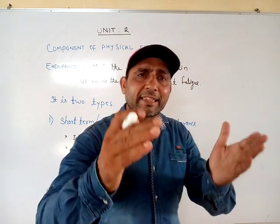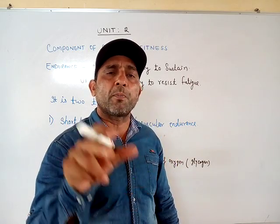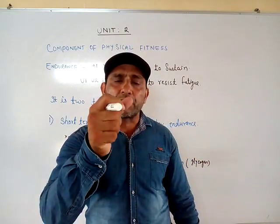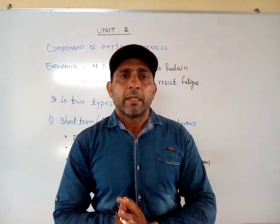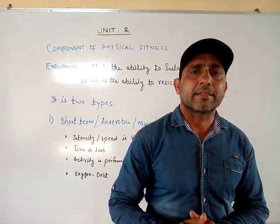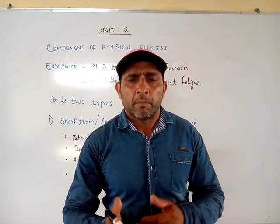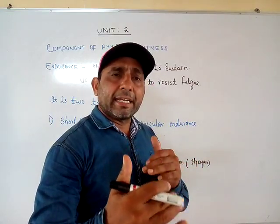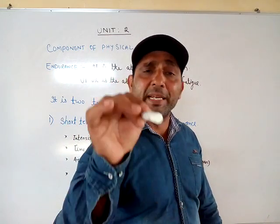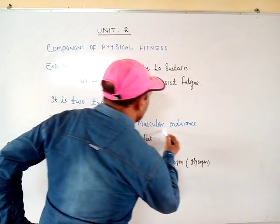So what the body does is it uses the stored energy in the muscles in the form of glycogen. That is the reason it is also known as muscular endurance — because in this kind of endurance the usage of the muscles is more, and the body is getting its energy from the stored energy in the muscles in the form of glycogen. This is the key point.